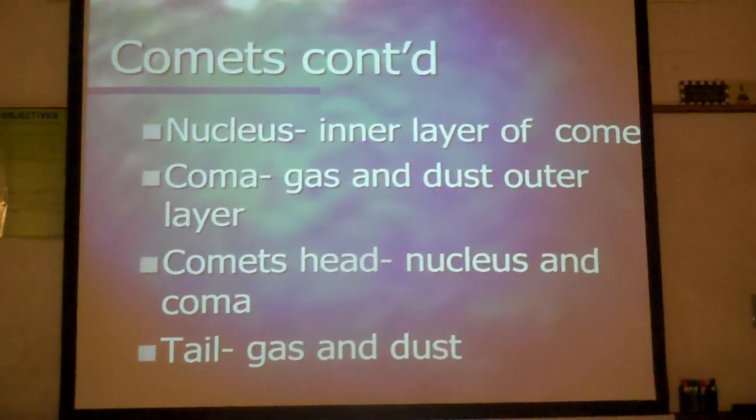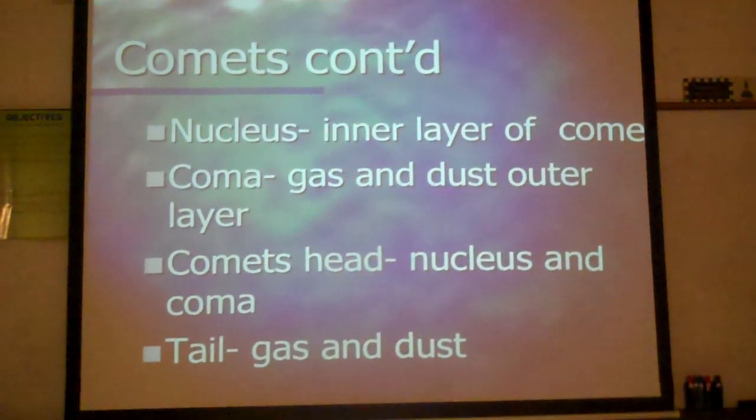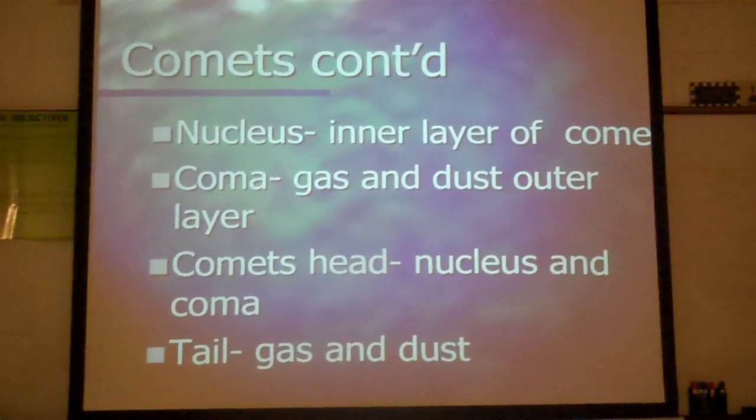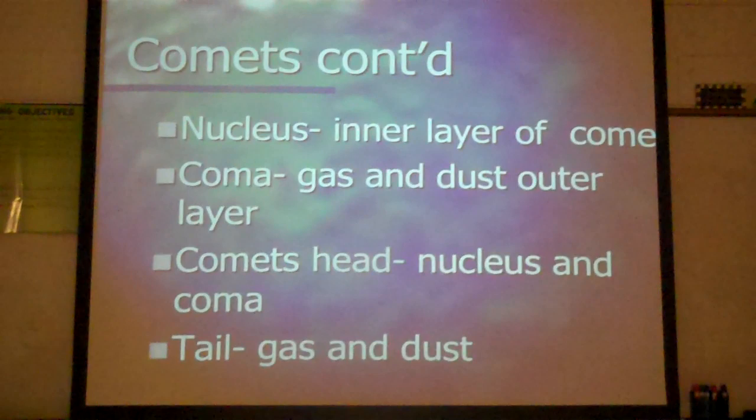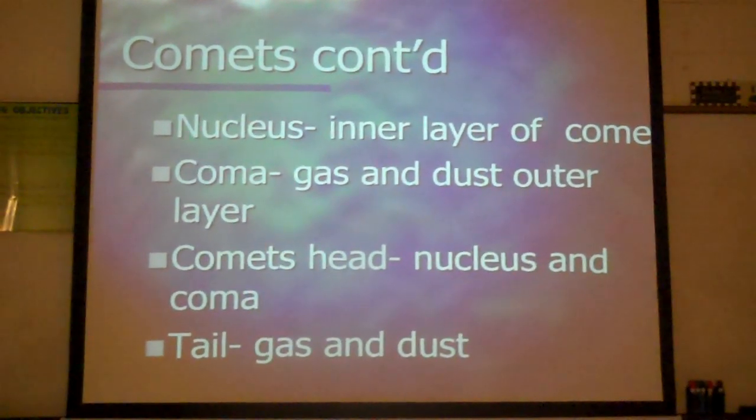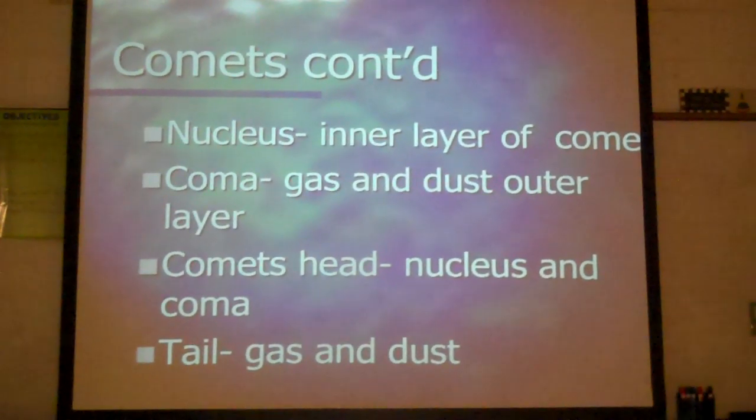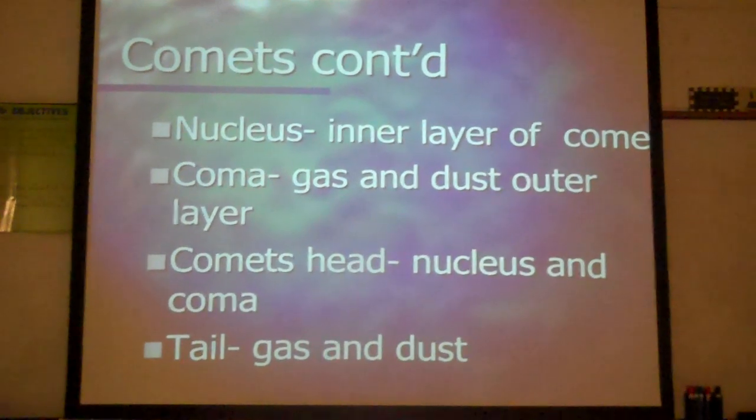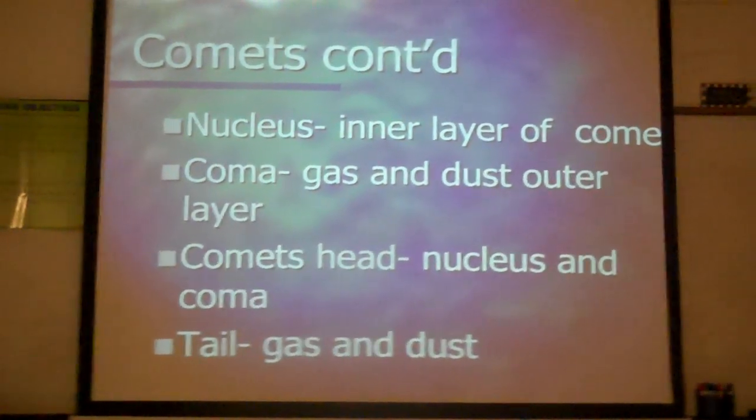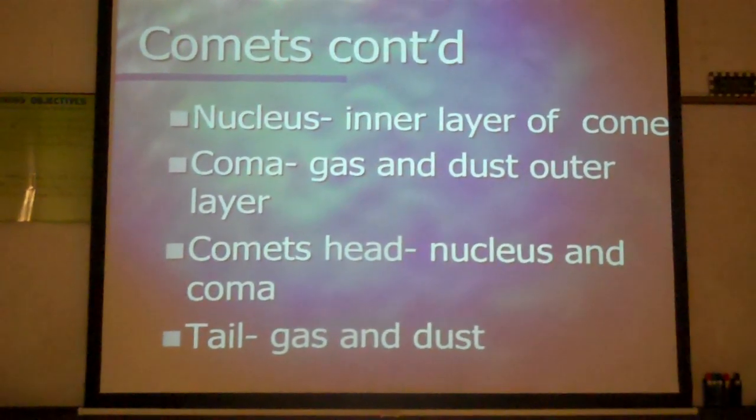The comet's head is the nucleus and the coma put together, and the tail is the gas and dust part of the comet. You can see all four in your picture: the nucleus, the coma, the tail, and the head which is both the nucleus and coma together.